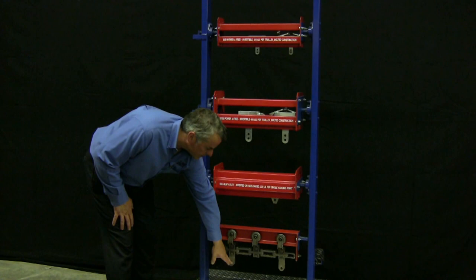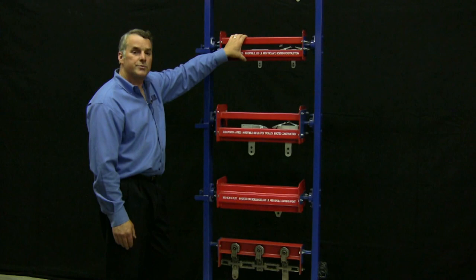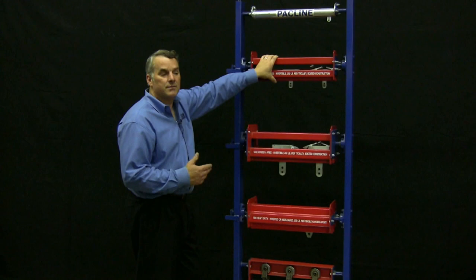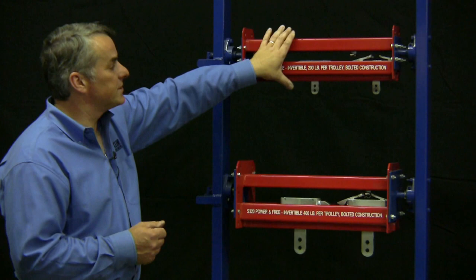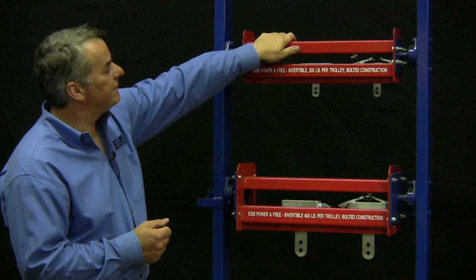These two conveyors are non-synchronous, which basically means that the loads hanging from this can be conveying at different paces, and they can actually stop and go independently of each other and can actually switch tracks. This is called the power and free conveyor. It's so named because on the top we have something similar to an enclosed track conveyor running continuously. So this chain is running continuously.